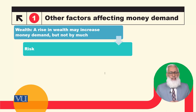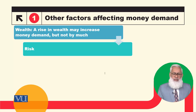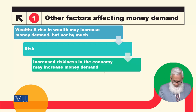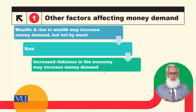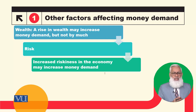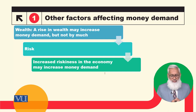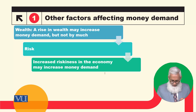दूसरा factor है risk। Risk के change होने से money demand कैसे change होगी — risk दो तरह का है। Increased riskiness in the economy may increase money demand। अगर economy में uncertainty आ जाती है किसी भी वजह से और riskiness में इजाफा हो जाता है, तो लोग money demand में इजाफा कर देंगे।